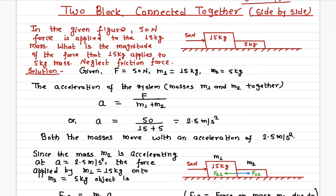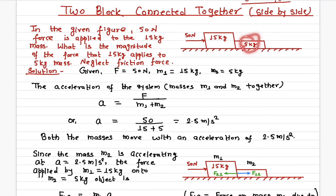In this video I'll talk about the force required to move two objects together. Here we have one mass and here another mass — a 15 kilogram mass and a 5 kilogram mass. These two masses are connected together and we are applying a force of 50 newtons to the 15 kilogram mass. The question is: how much force is acting onto the 5 kilogram mass once we apply a 50 newton force onto the 15 kilogram mass?